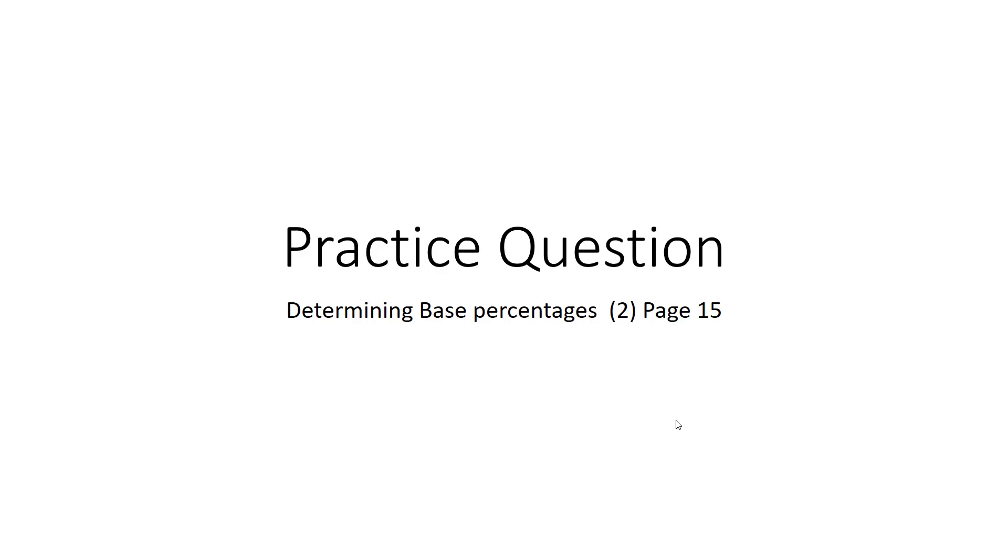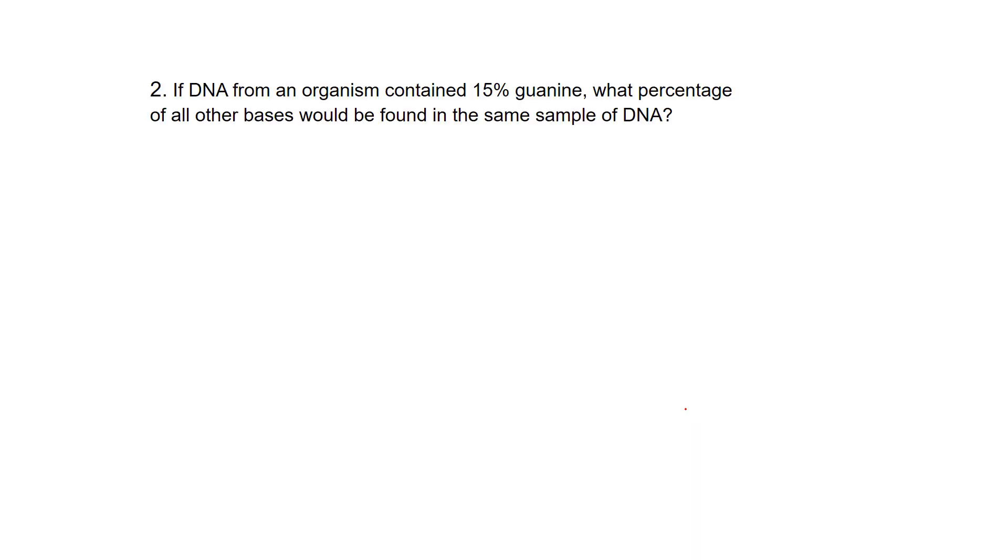Practice question number two, page 15. If DNA from an organism contains 15% guanine, what percentage of the other bases—and of course there's only three other bases—would be found in that same sample?